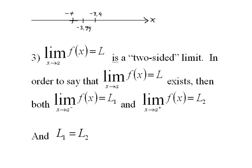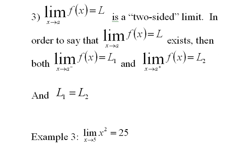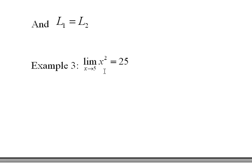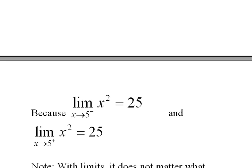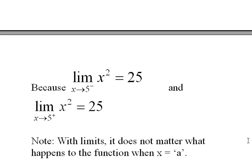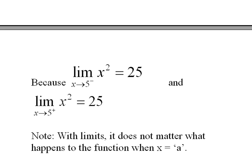You might stop and read that over again. Here's example three: the limit of x squared as x approaches 5 equals 25, and it equals 25 from both sides. The limit of x squared as x approaches 5 from the left equals 25, and from the right also equals 25. The limits exist and they're equal. Note that with limits, it doesn't matter what happens to the function when x equals a — it only matters what the function is getting closer to as x approaches a.